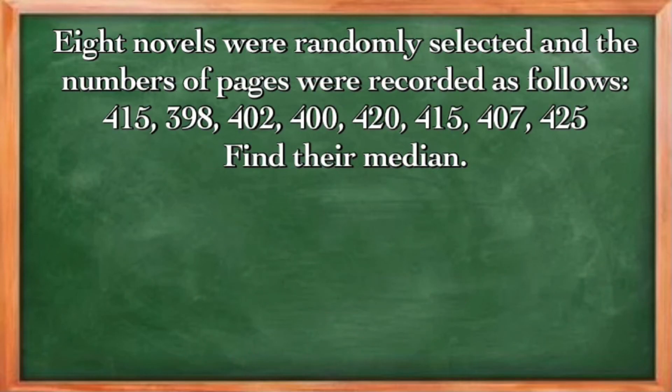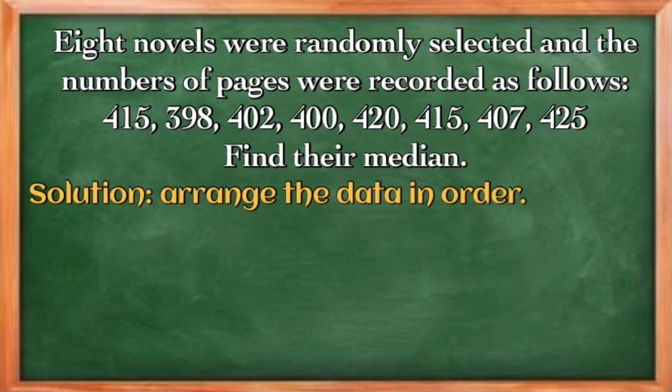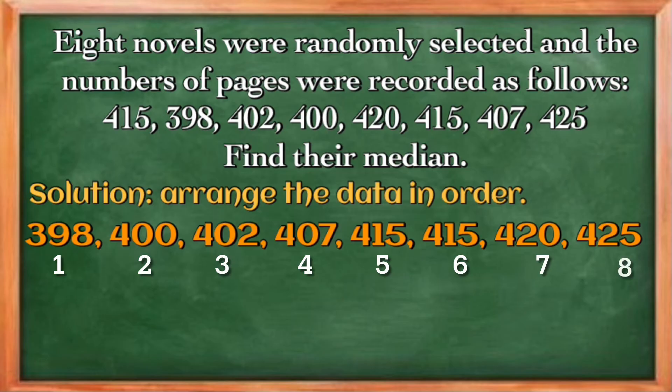Now let us try to have this example. Eight novels were randomly selected and the numbers of pages were recorded as follows. Let us try to find their median. If we're going to order this data set, we can see here that the sample size is eight, and this is an even number of values, so we need to use rule number two. All we need to do is identify the two middle rank values, and in this case it's 407 and 415.